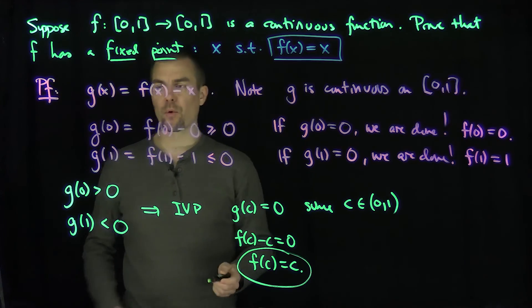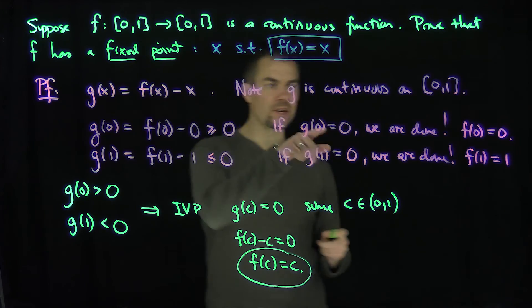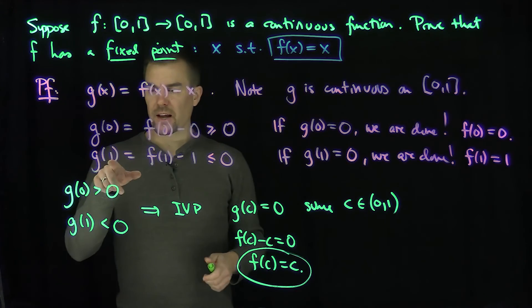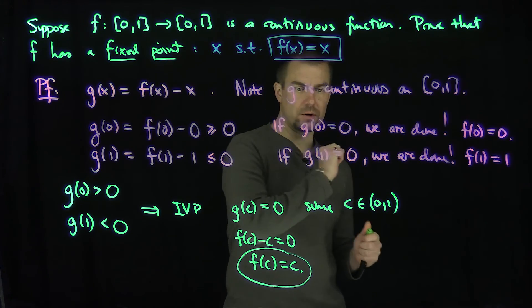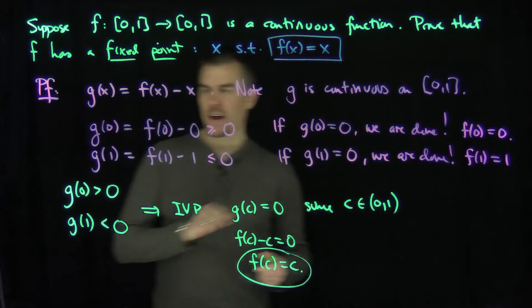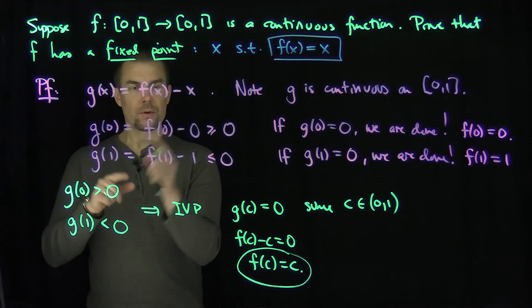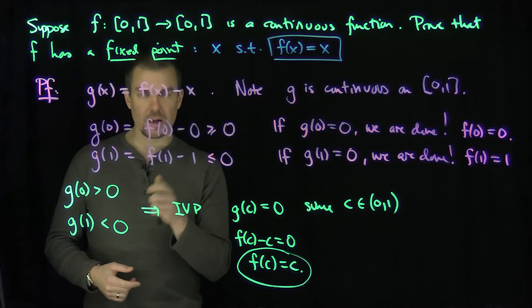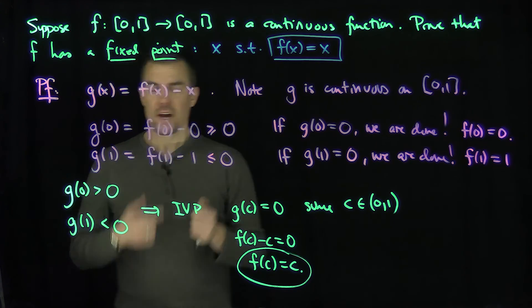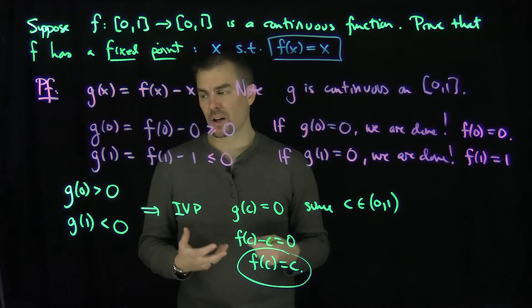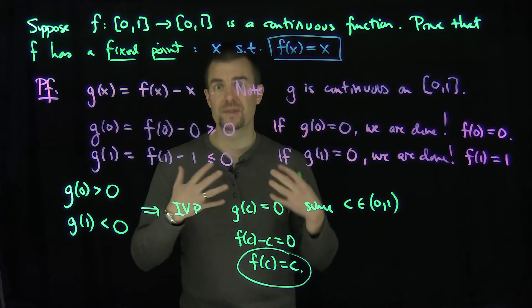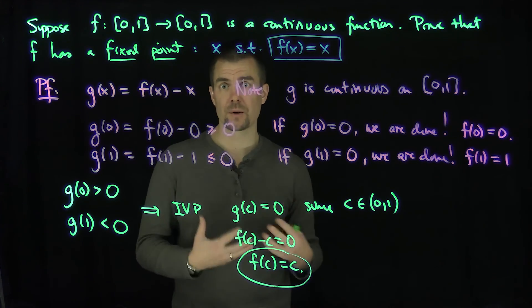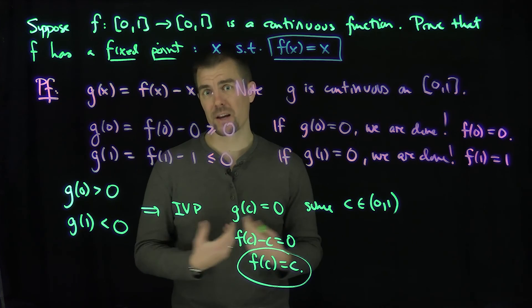In the first case, g of zero equals zero and we're done. In the second case, g of one equals zero and we're done. In the final case, g of zero is strictly greater than zero and g of one is strictly less than zero — we're still done, because the intermediate value property gives us a point c between zero and one where f of c equals c. Thank you very much.